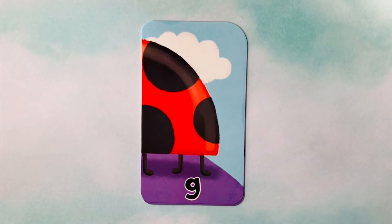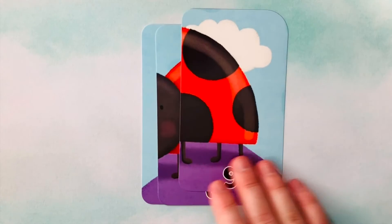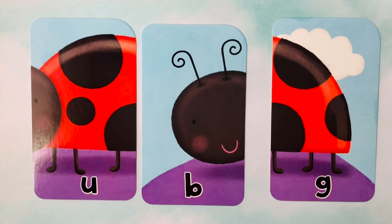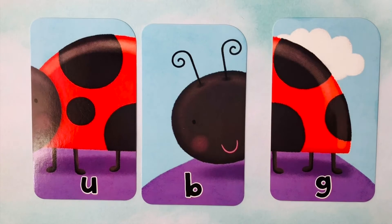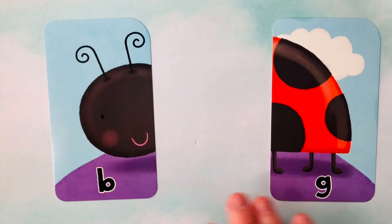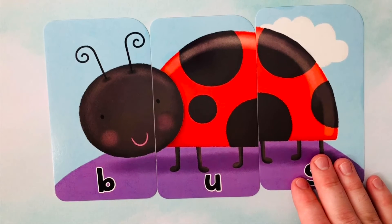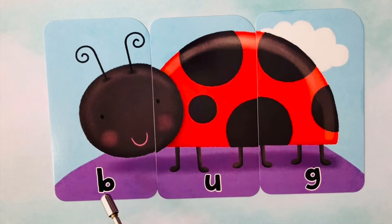Let's do another word. I see a G to begin. We also have a U. And our third letter is a B. I think we're trying to spell the word bug. Bug starts with a B, follows with a U, and finishes with a G. B-U-G spells bug.